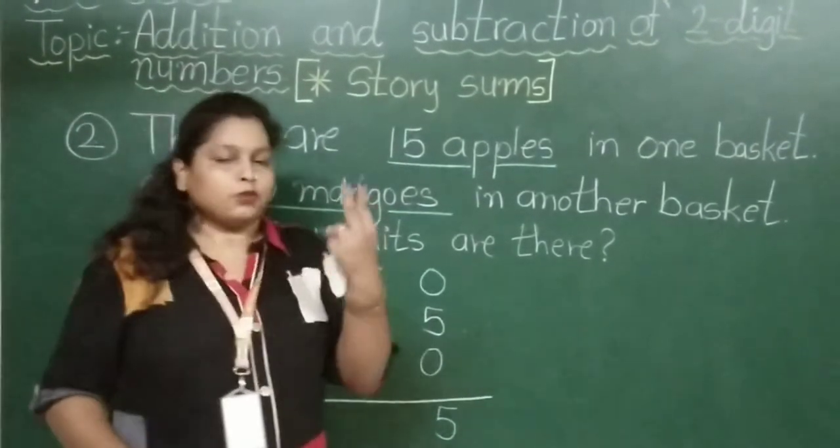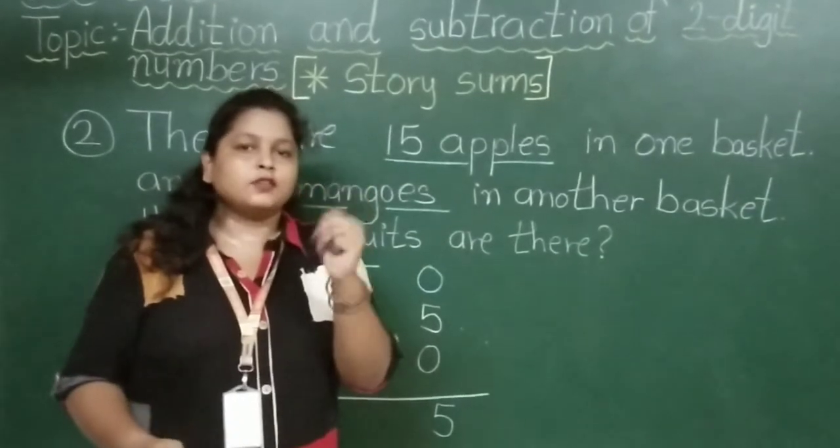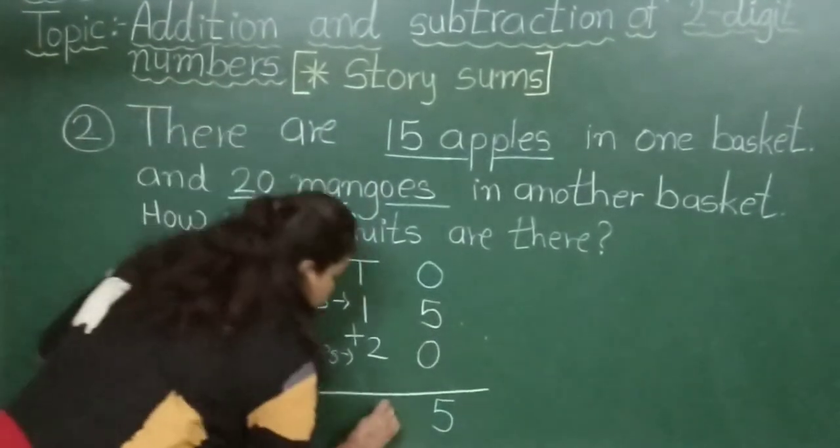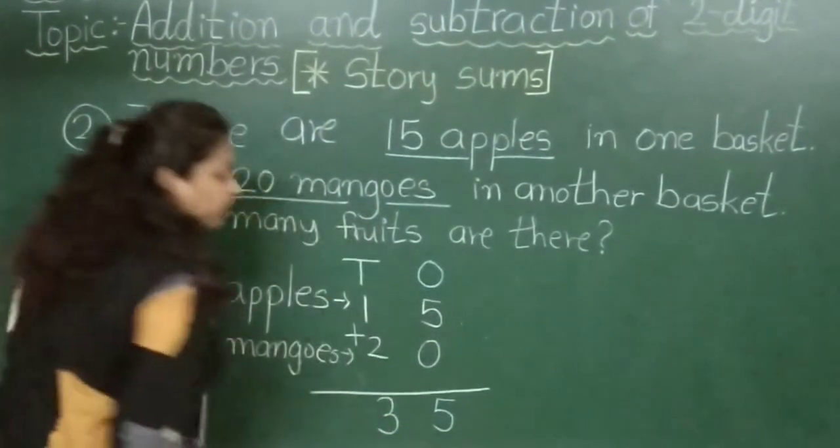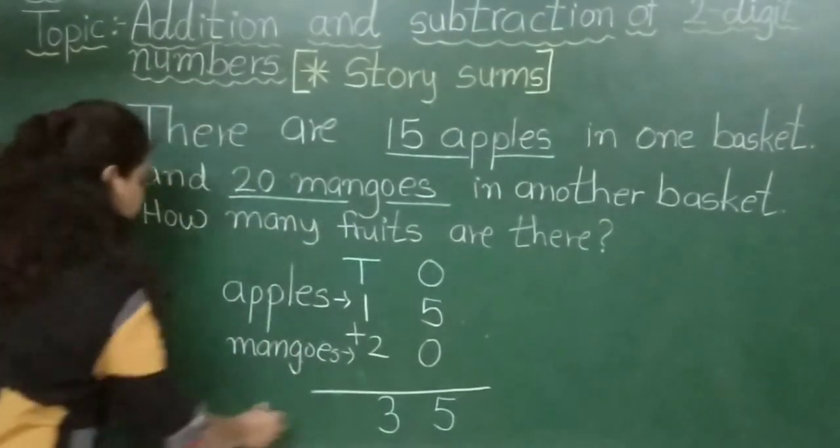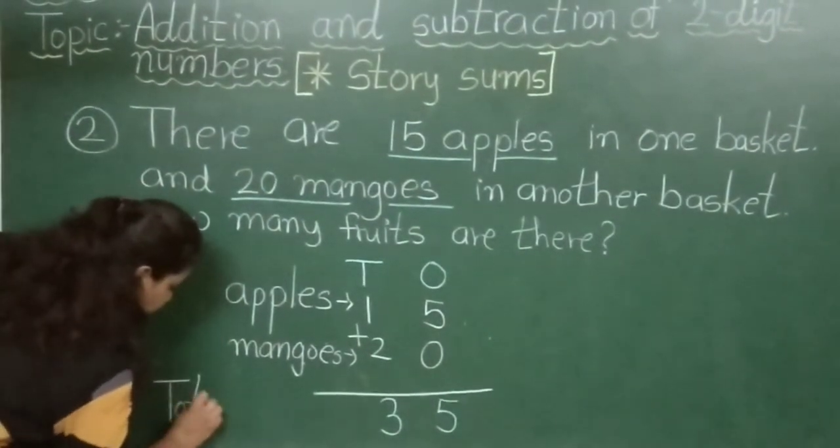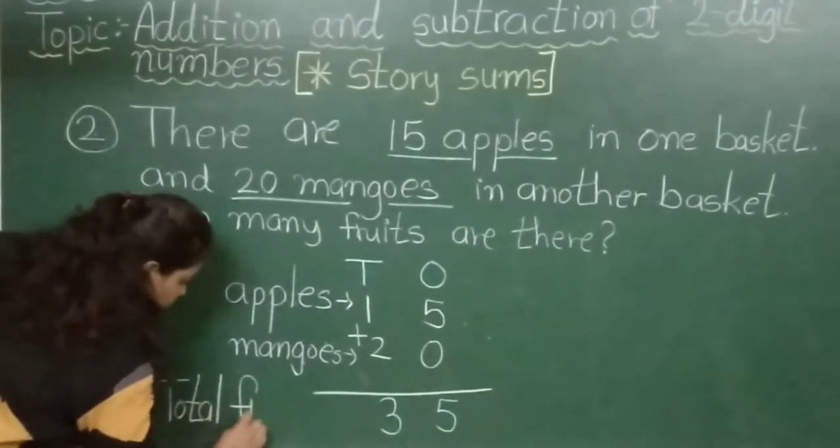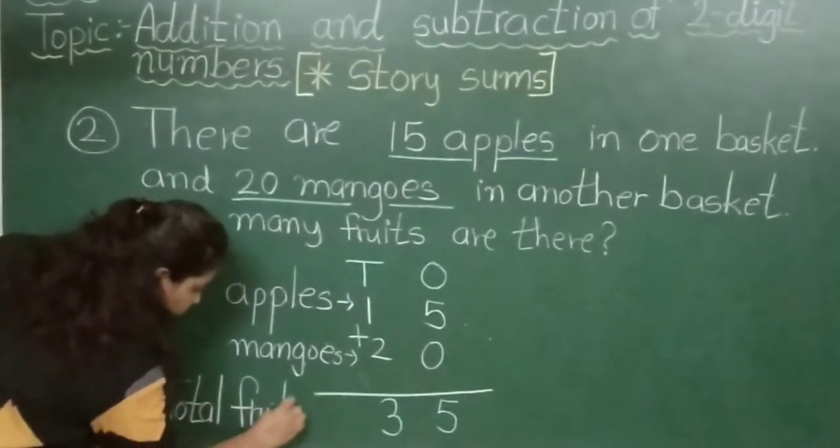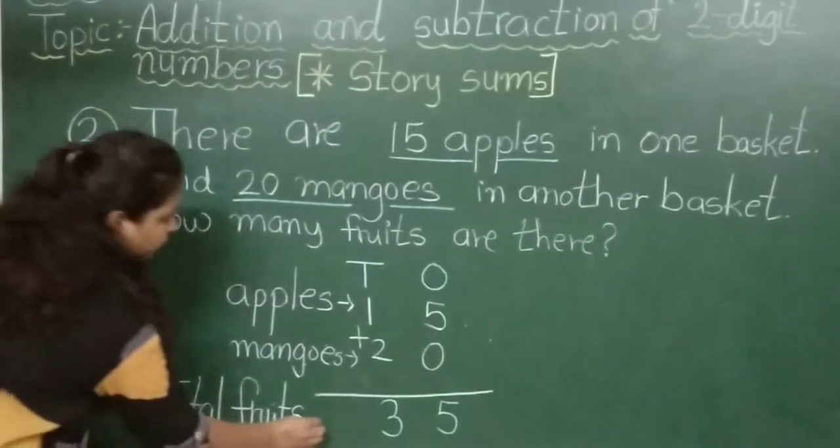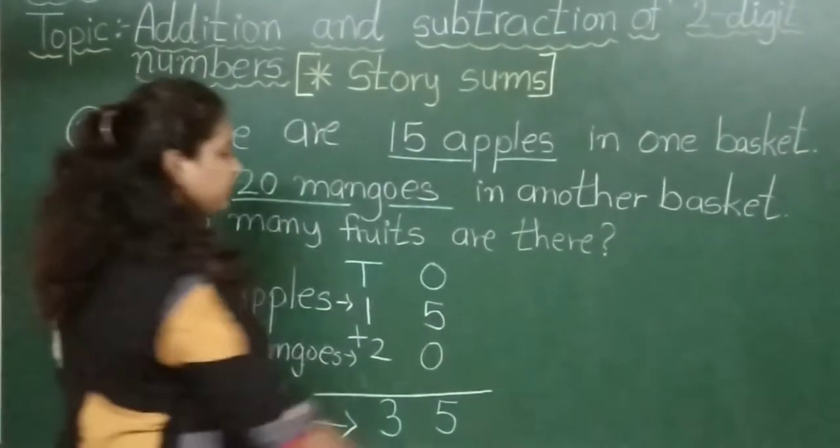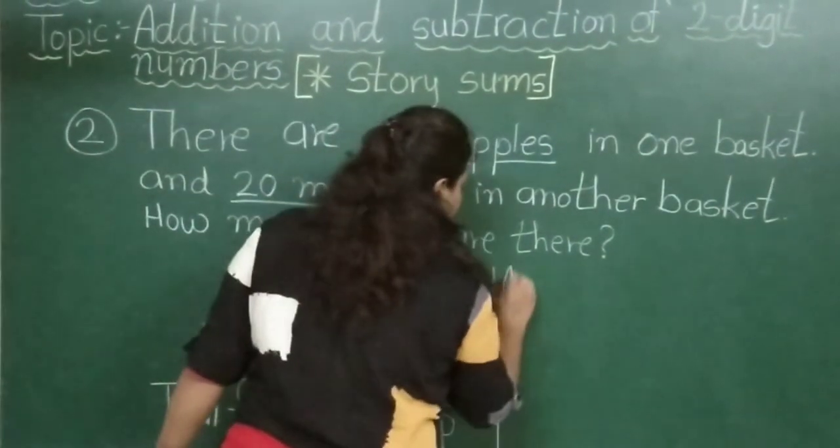So 1 plus 2, that's easy. 2 here and 1 here. How many? 3. So write 3, 5: 35. So this is total fruits. Total fruits are how many? 35.